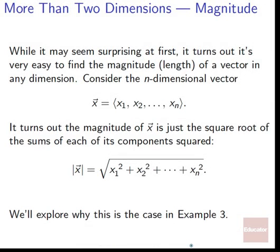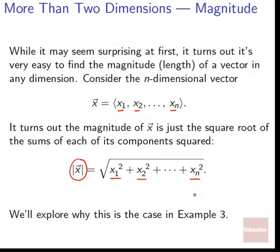We can find the magnitude of a vector in any dimension. For an n-dimensional vector x equals ⟨x₁, x₂, ..., xₙ⟩, the magnitude equals the square root of the sum of each component squared: √(x₁² + x₂² + ... + xₙ²). This might seem surprising at first, but it makes sense — we'll explore why in the examples. You can also just memorize this formula and it will work out.